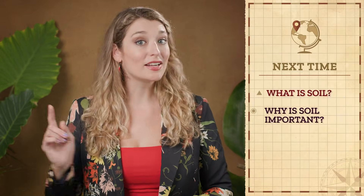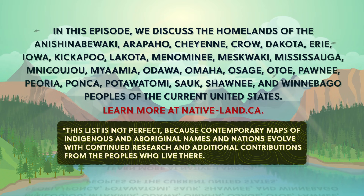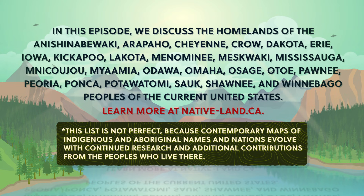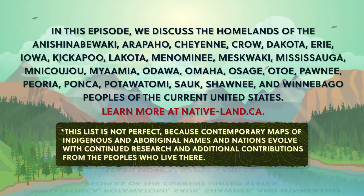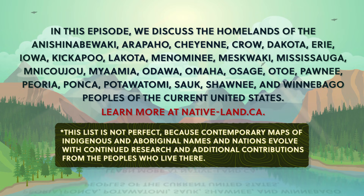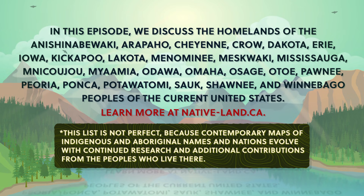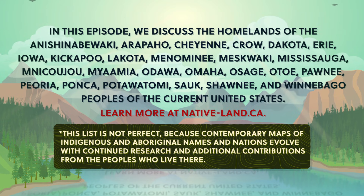Creating a sustainable planet is something we'll keep exploring spatially, including next episode when we look down beneath our feet to the soils. Many maps and borders represent modern geopolitical divisions that have often been decided without the consultation, permission, or recognition of the land's original inhabitants. Many geographical place names also don't reflect the Indigenous or Aboriginal peoples' languages. We at Crash Course want to acknowledge these peoples' traditional and ongoing relationship with that land and all the physical and human geographical elements of it. We encourage you to learn more about the history of the place you call home through resources like nativeland.ca and by engaging with your local Indigenous and Aboriginal nations through the websites and resources they provide.